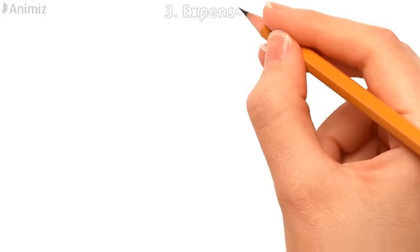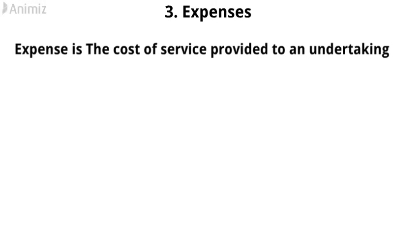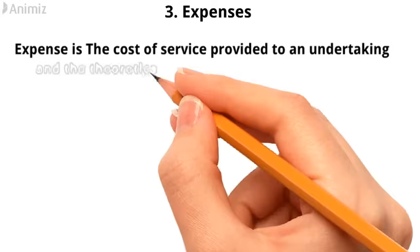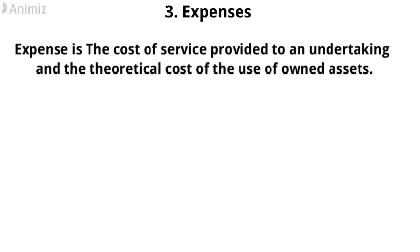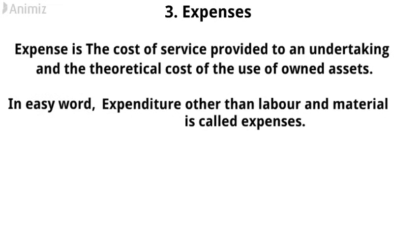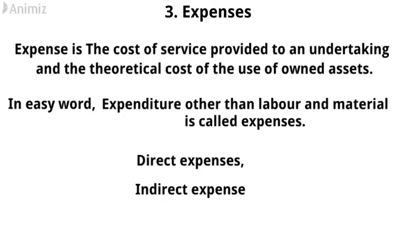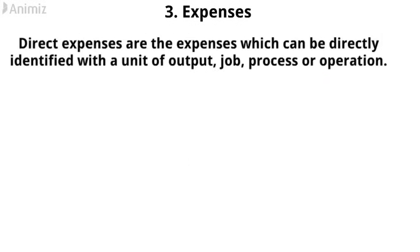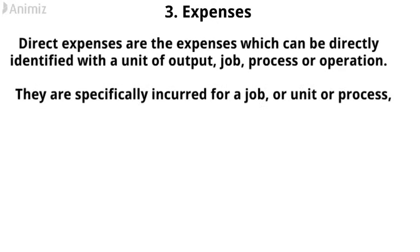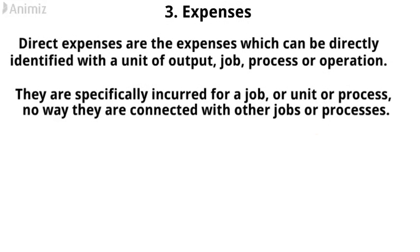3. Expenses. Expense is the cost of service provided to an undertaking and the notional cost of the use of owned assets. In other words, it is the expenditure other than labor and material, which is called expenses. Expenses are of two types: direct expenses and indirect expenses. Direct expenses are the expenses that can be directly identified with a unit of output, job, process, or operation. They are specifically incurred for a job or unit process and in no way are they connected with other jobs or processes.